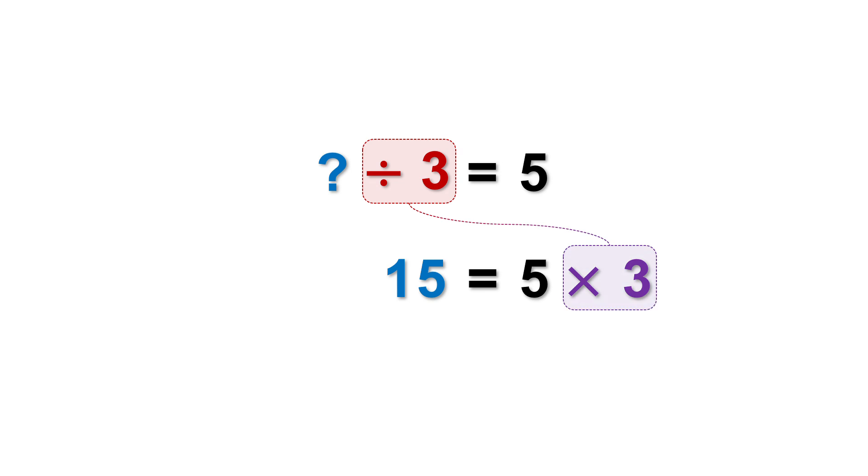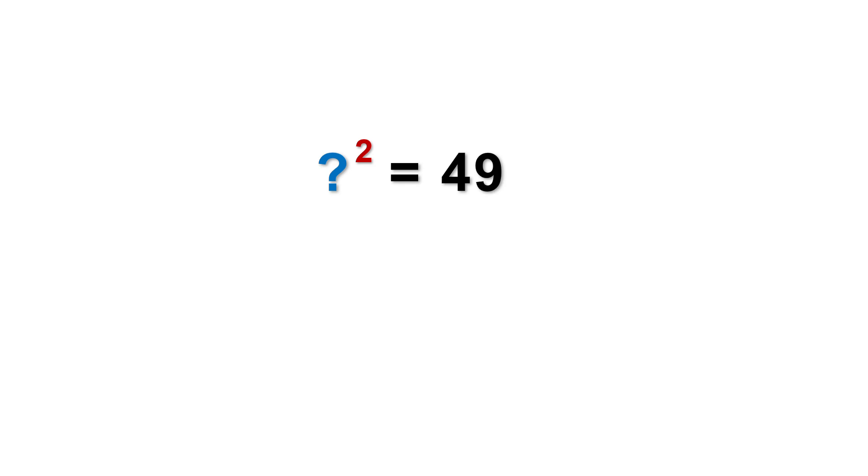In secondary school we learned a new operation, powers. For example, you take a number, square it and get 49. What's the original number? Here we use the opposite operation of squaring, which is taking the square root. The square root of 49 is 7, so the original number is 7. In this case, powers and roots are opposites.